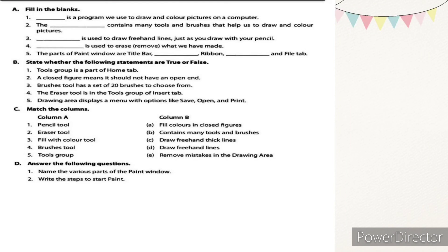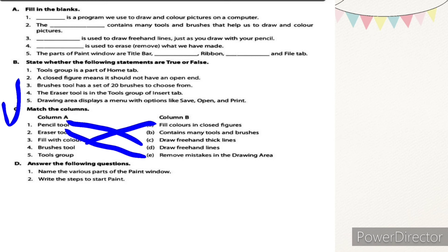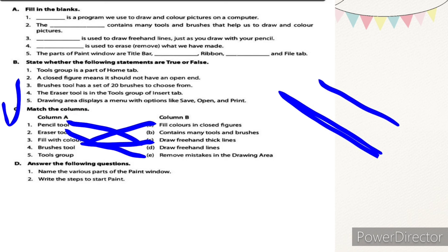Match the column. Pencil tool — used to draw freehand lines. Eraser tool — remove mistakes in the drawing area. Fill with color — fill colors in a closed figure. Brushes tool — draw freehand thick lines; you can draw thick lines with the brushes tool. Tools group — contains many tools and brushes.